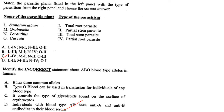Identify the incorrect statement about ABO blood type alleles in humans. It has three common alleles A, B and O — correct. Type O blood can be used in transfusion for any blood type — correct, it's a universal donor. It controls glycolipids on erythrocyte surfaces — correct. But individuals with blood type AB have anti-A and anti-B antibodies in their serum — that is wrong. Answer is option D.